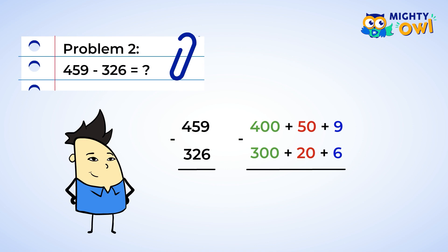Nine take away six is three. Next the tens. Fifty minus twenty is thirty. And finally the hundreds. Four hundred take away three hundred is one hundred. And we're left with one hundred thirty and three. And if you put the values back together, we get one hundred thirty-three. So far so good.